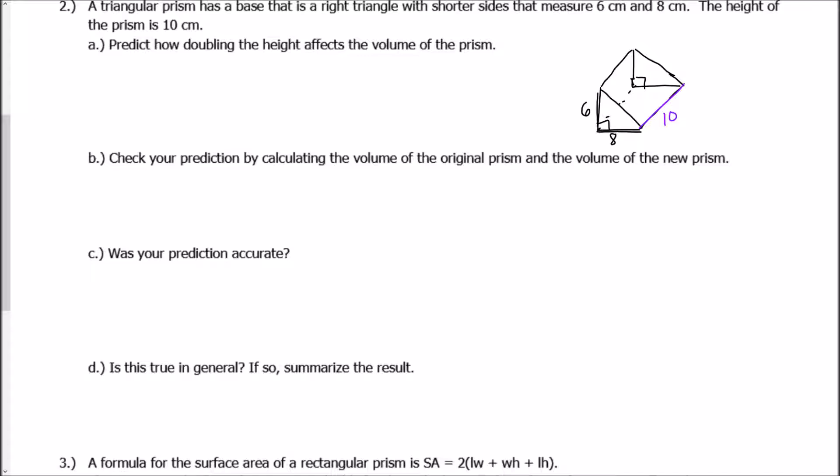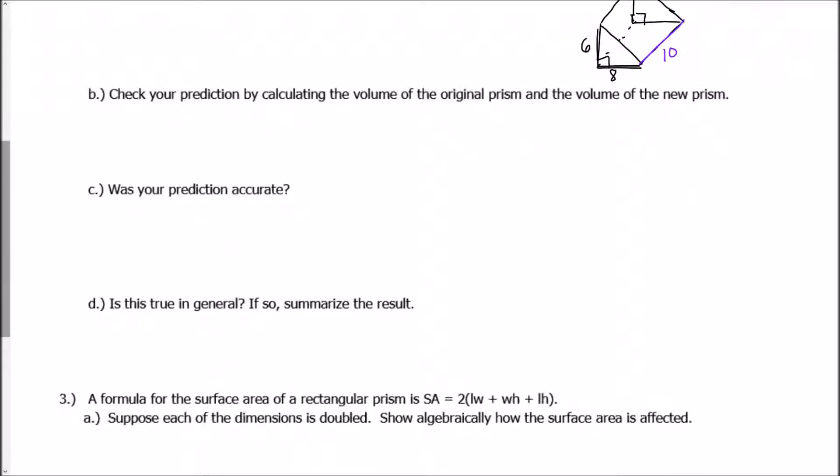Okay, so for B, it says check your prediction by calculating the volume of the original prism and the volume of the new prism. So in order to find the volume of the original prism, remember any prism, it's always the area of the base times the height, no matter what shape the base is. Okay, so let's find the area of our base first.